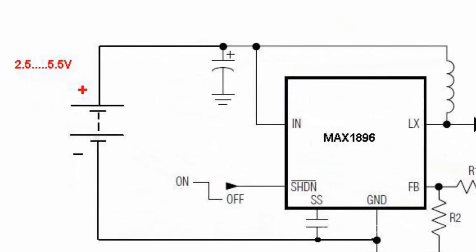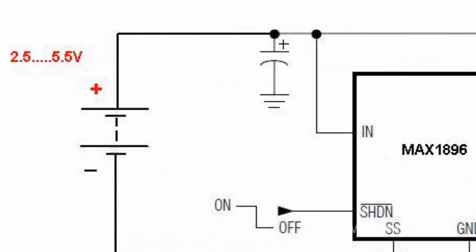A circuit with Max 1896 transformer operates from one or several batteries.